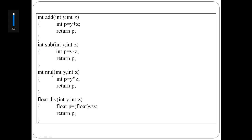Next, the multiplication function, function name 'mult', two parameters y and z, both integers. The operation is p equal to y into z, then return p. p is also an integer number so return type is int.